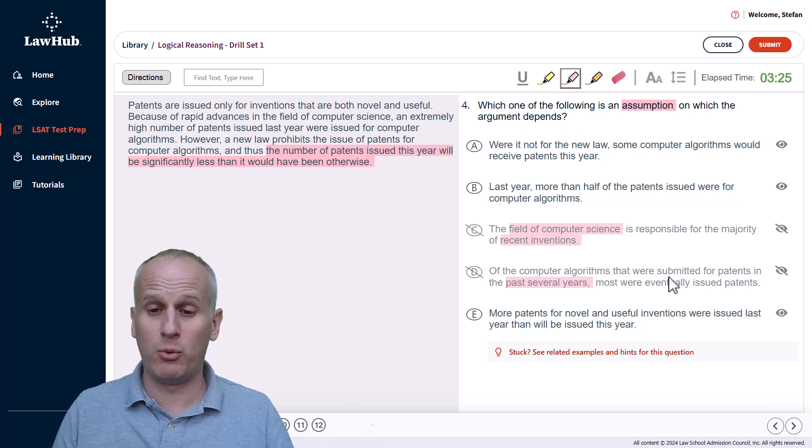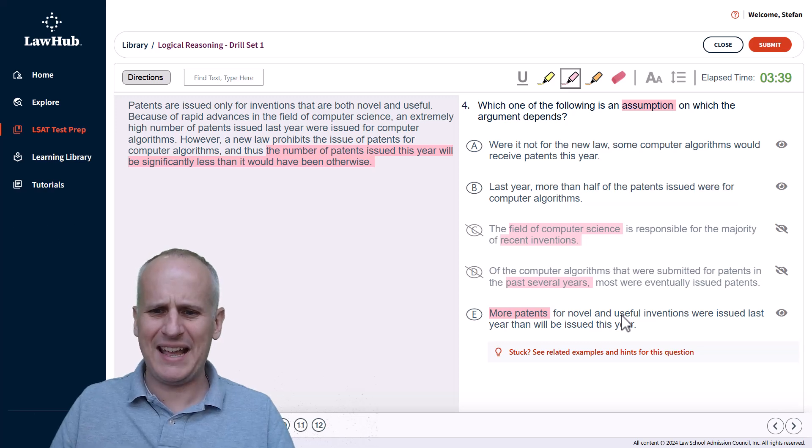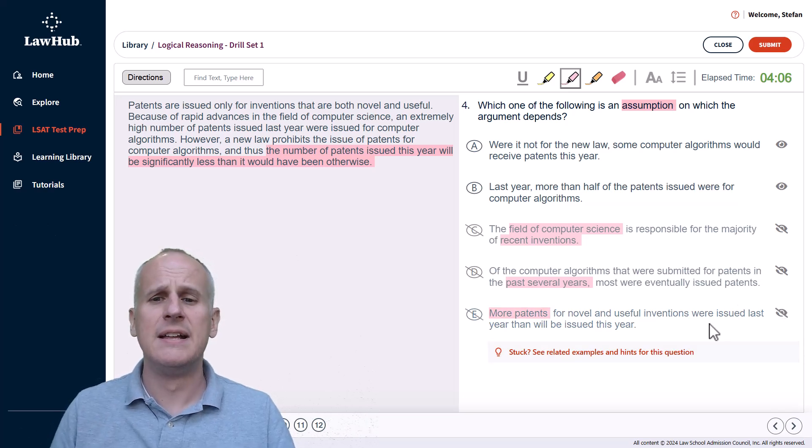And lastly, with choice E, we have more patents for novel and useful inventions were issued last year than will be issued this year. And we might think more patents, talking about novel and useful inventions, that's in the paragraph, but it's the very first statement. And if we were to interrogate that quantity of more patents, what if it's one more patent? Well, it doesn't really do much to the argument. Could it be a million new patents? Maybe, but it's not clearly identifying the quantity of more. And we know that the number of patents issued this year is supposed to be significantly less, and that isn't clearly impacted by choice E. So we can eliminate it for that ambiguous quantity of more patents.